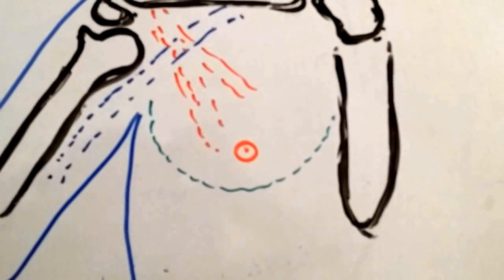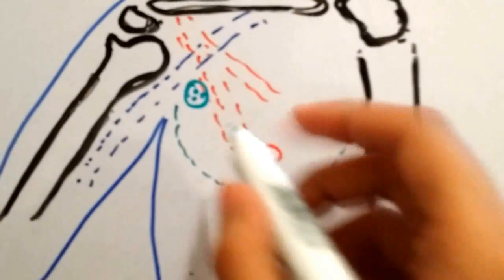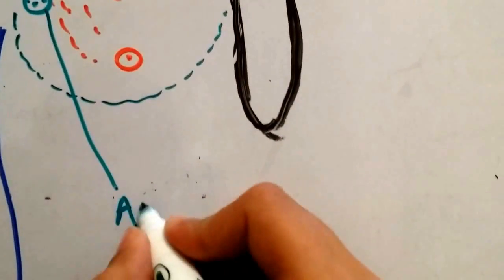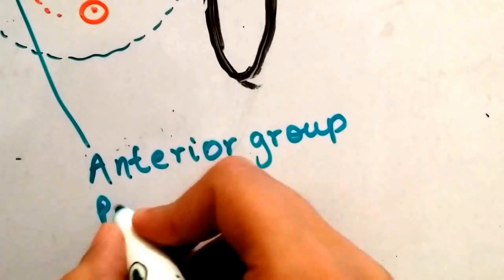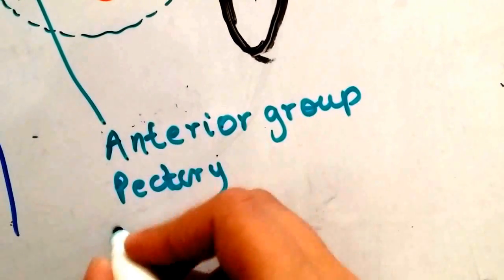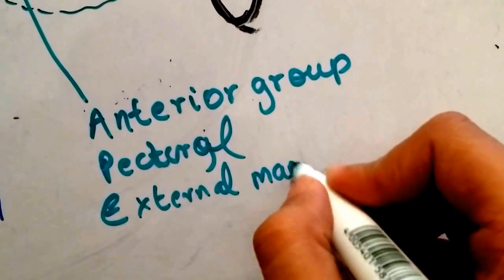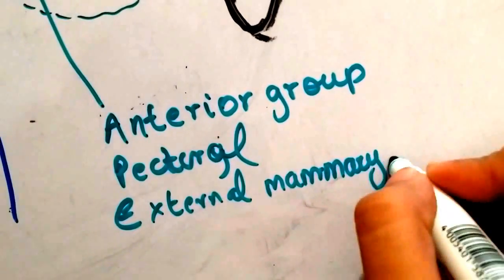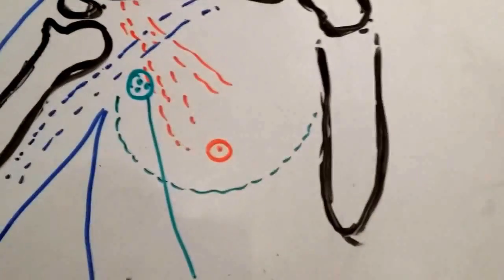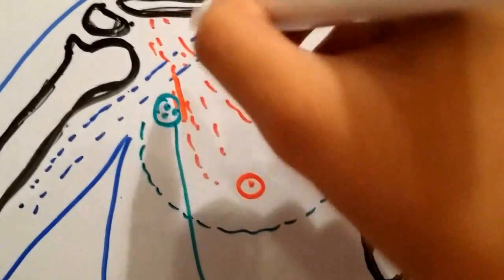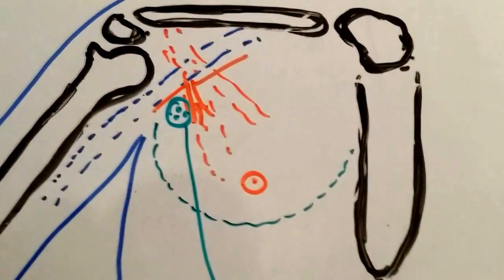The first group of lymph nodes I'm going to talk about is the anterior group, which I'm drawing out here. The anterior group of lymph nodes are most commonly involved in breast cancers. They are also known as the pectoral group or the external mammary group of lymph nodes, and they lie in relationship to the lateral thoracic vessels, which is a branch of the axillary vein that supplies the breast.